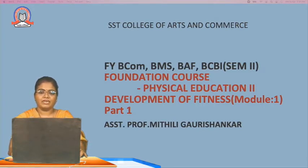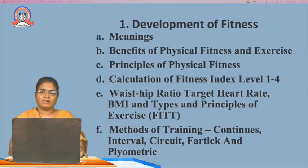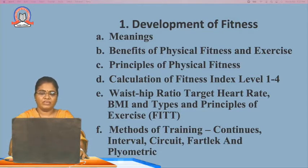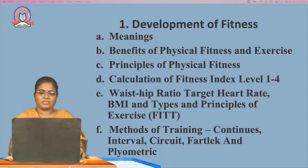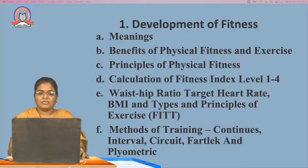In this module we are covering development of fitness. We will see the objectives, meaning, and benefits of physical fitness and exercise, principles of physical fitness, calculation of fitness index levels 1 to 4, waist-hip ratio, target heart rate, BMI, and types and principles of exercise — that is the FITT method of training. We will also see continuous, interval, circuit, fartlek, and plyometric types of training.